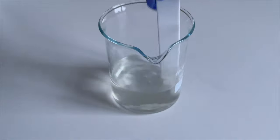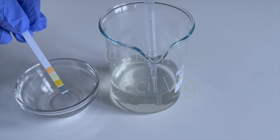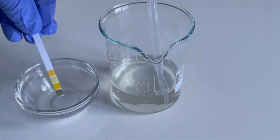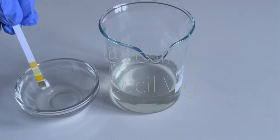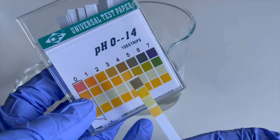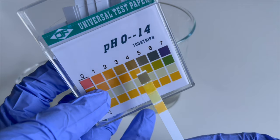After mixing the ethyl ascorbic acid, we test the pH value of the toner. The final pH should be between 4.5 and 5. Let's see. The pH value is between 4.5 and 5, and this is perfect. No adjustment needed.